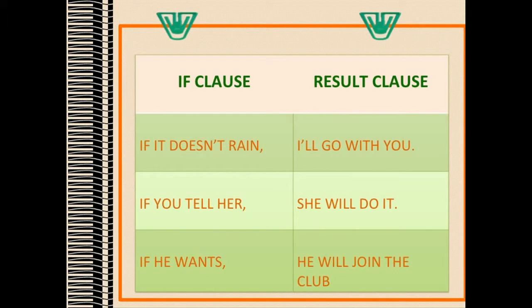Some more examples. Let's see what tense the verbs in these examples are. For the if clause, if it doesn't rain, the verb is in the present simple. The result clause is I'll go with you. The verb is in the future simple. See these other examples. If you tell her, she will do it. If he wants, he will join the club.